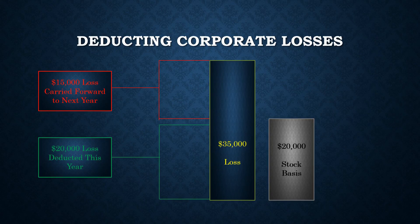To deduct a loss from an S-Corporation, the shareholder must have enough stock basis to absorb the loss. For example, if Bob is the sole shareholder in an S-Corporation that incurs a $35,000 loss in 2016, he can deduct that loss up to his BASIS.